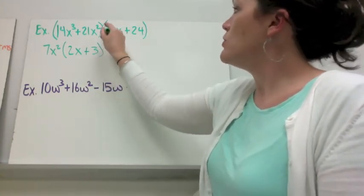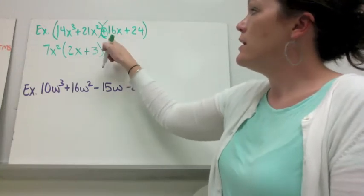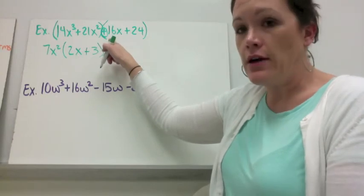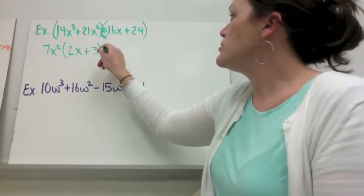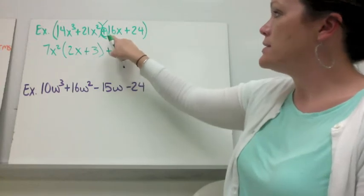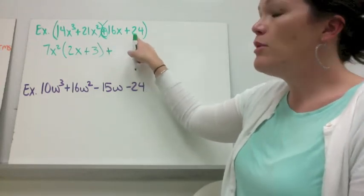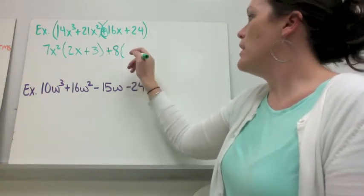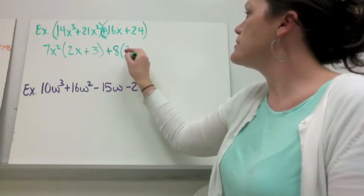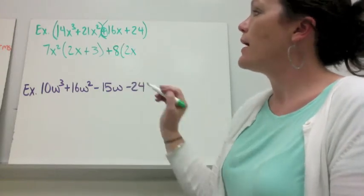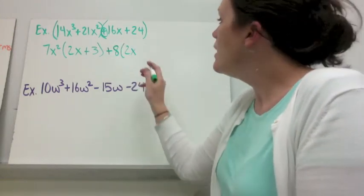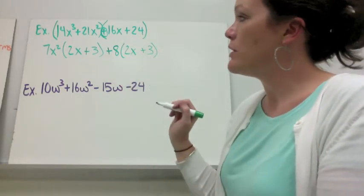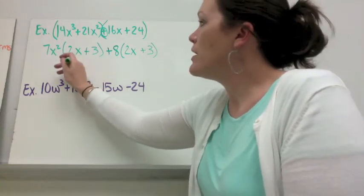On the next binomial, you want to take out whatever sign the third term has. If it's positive, you take out a positive. If it's negative, you take out a negative greatest common factor. So I'm going to take out a positive, and then 16x and 24 would both divide by 8. So I'm going to take out 8, and I would have left 2x, because 2x times 8 would give me back 16x, and 8 times 3 gives back 24.